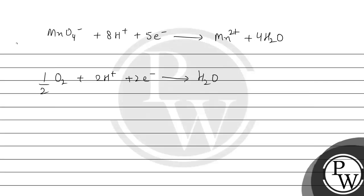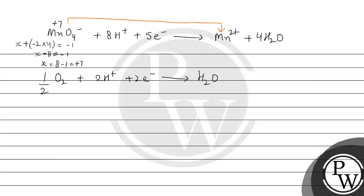In MnO₄⁻, let's find manganese's oxidation state. Let x be the oxidation state of Mn. Oxygen's oxidation state is −2, and there are 4 oxygen atoms, so 4×(−2) = −8. The overall charge is −1, so x − 8 = −1, giving x = +7. So the oxidation state of manganese in MnO₄⁻ is +7.